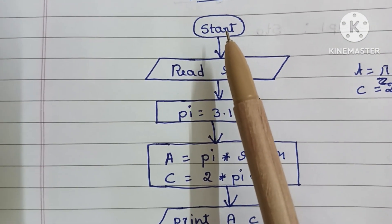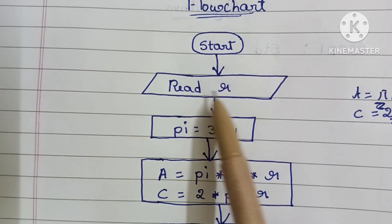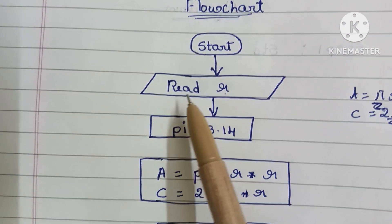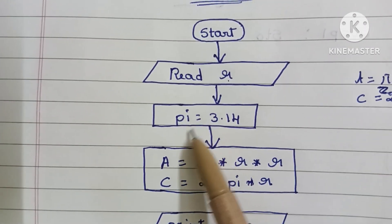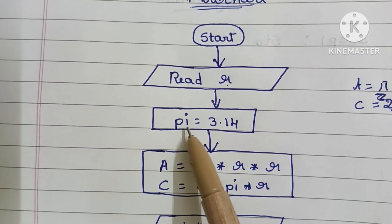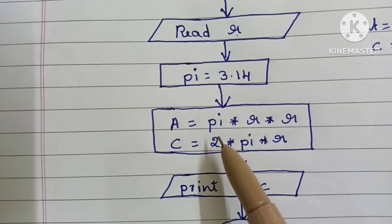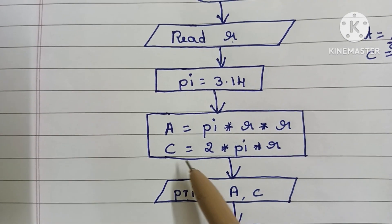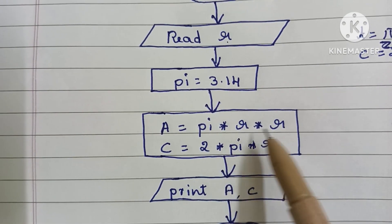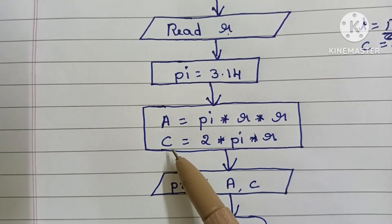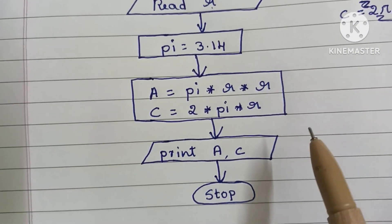To summarize: the flowchart starts with START in an oval shape. Next, we read the radius R in a parallelogram. Then we declare pi = 3.14 in a rectangle. Then we calculate A = pi × r × r and C = 2 × pi × r, also in a rectangle.